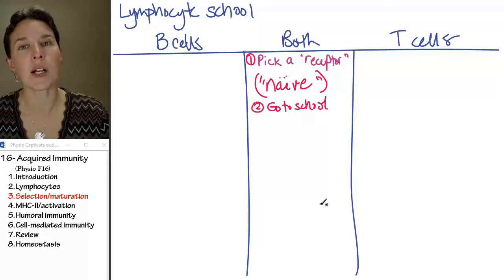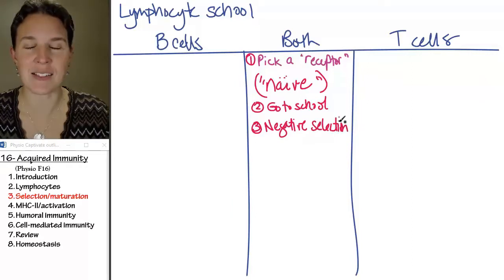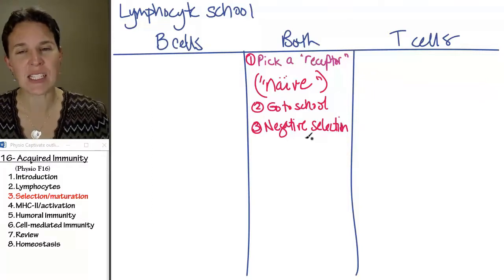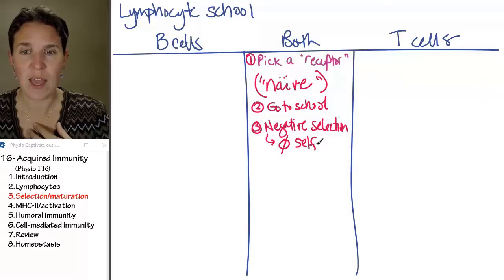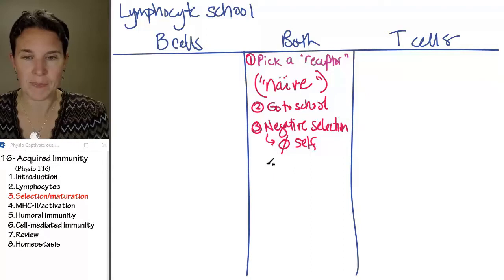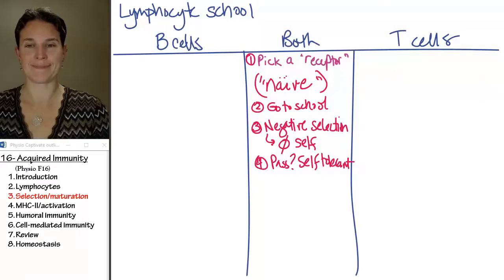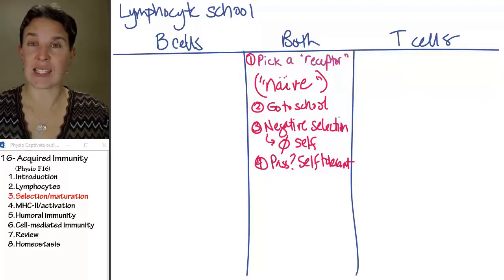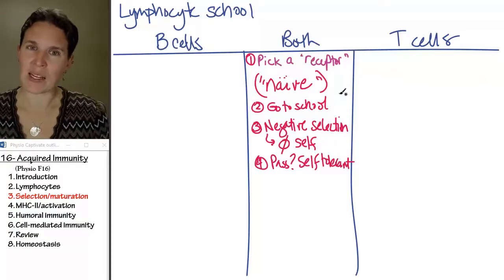Both of them participate in negative selection class. One of their classes they have to take is negative selection, and this one involves making sure that you do not bind to self. If you pass this class, then you are going to be self-tolerant. If you don't pass, that means you actually stick to self-molecules — your receptor binds to you — and that's bad.